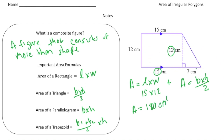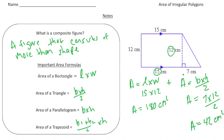Now for the area of the triangle — base times height — area is going to be seven times 12, divided by two. Seven times 12 is 84, and 84 divided by two is 42. So the area of that triangle piece is 42 square centimeters. Finally, to find the area of the entire shape, I add the two areas together: 180 plus 42 gives us 222 square centimeters.